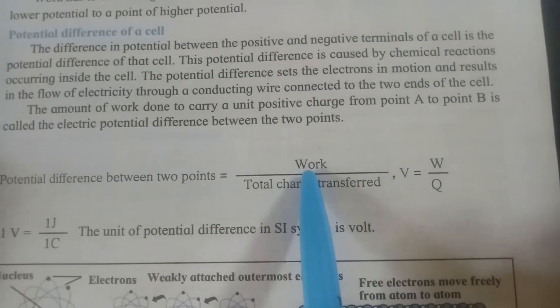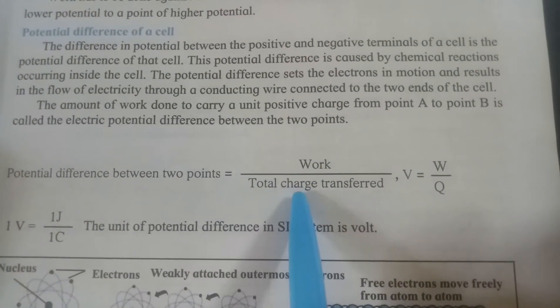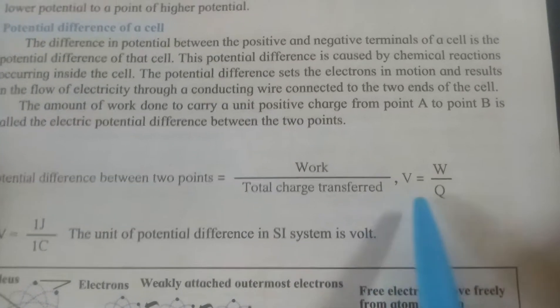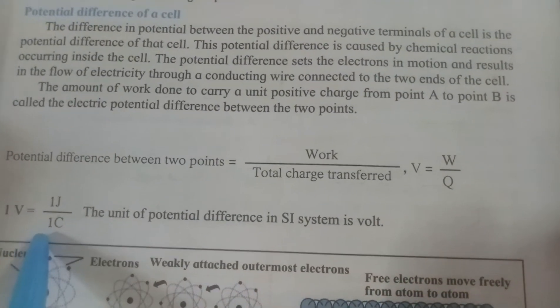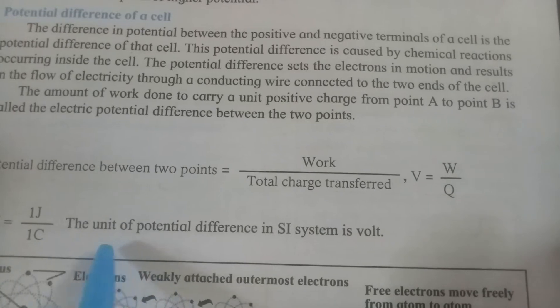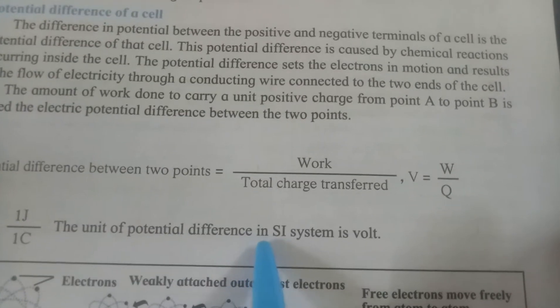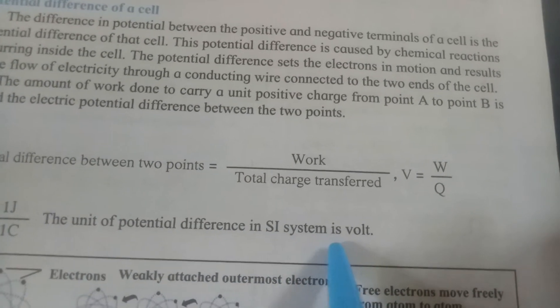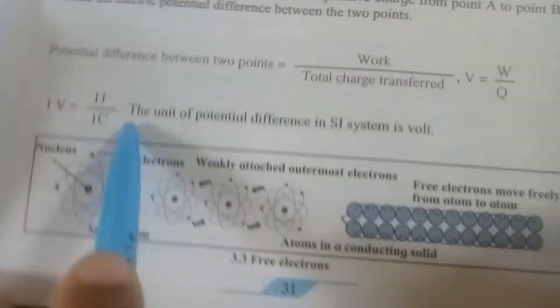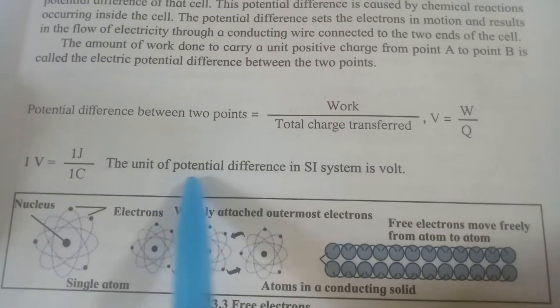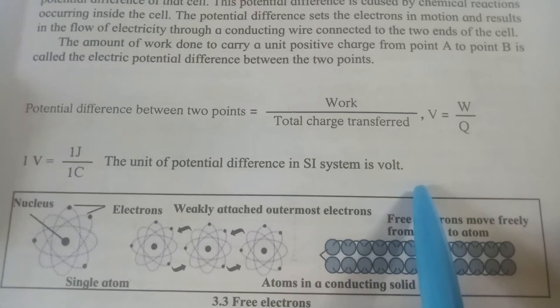Work unit 1 joule and total charge transfer has a unit 1 coulomb. The unit of the potential difference in SI system is volt. SI system made potential difference unit kaaya hai volt.